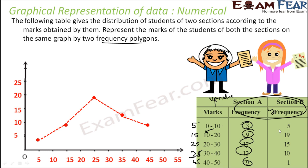Let's draw the other section B. I plot point (5, 5) and join it. I am joining the point at the prior class and the class after as well — it's good to join those so you get the full area.